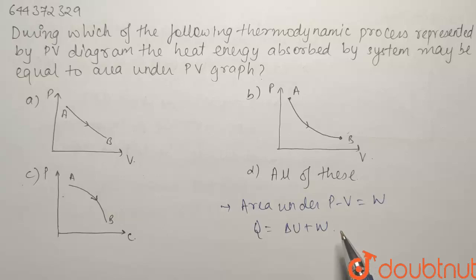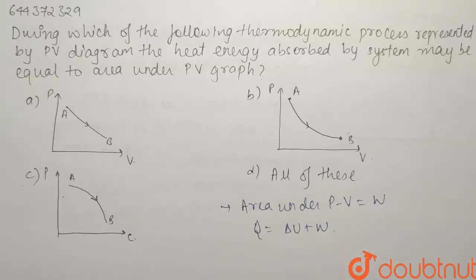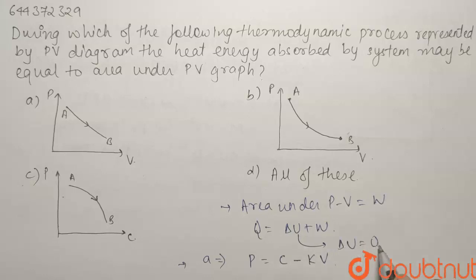If I talk about the first process, option A's equation will be of the form P equals to some constant C minus KV. For the given process, the temperature cannot be constant because we know that temperature will be constant for isothermal only. Q will be equals to W when delta U will be equals to 0.